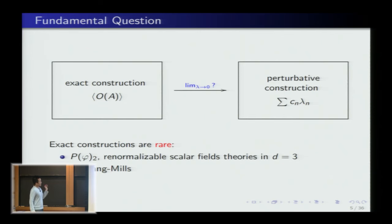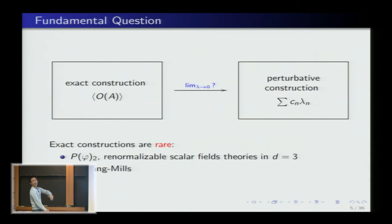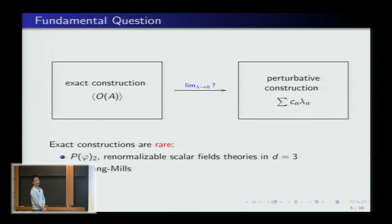For most quantum field theories, the default approach is to use the formal perturbative expansion and treat that as essentially the definition of the path integral. But for 2D Yang-Mills we actually have an exact construction, so the fundamental question makes sense. This is what I'm looking at: I'm now going to tell you about Yang-Mills theory, the exact construction of the measure, and then my results in answering this question.